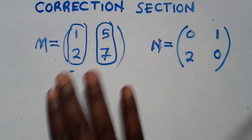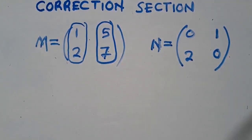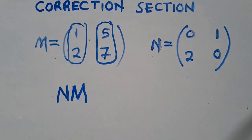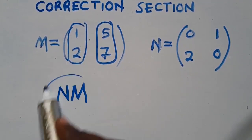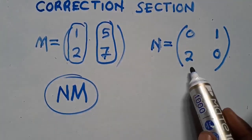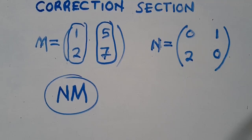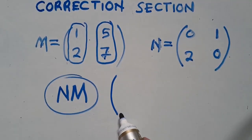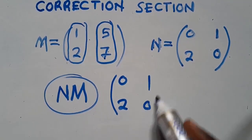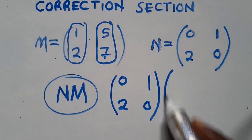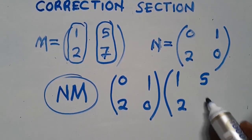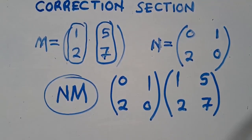The other question, which most of us are facing some challenges on, is M times N. Whenever you see this, it's the same as being given two matrices and told to multiply. Some questions will say 'express MN as a single matrix' — it's just the same thing. Your N is 0, 2, 1, 0 and your M is 1, 2, 5, 7. You are supposed to arrange these the same way they are given in the question. Then you start the multiplication.